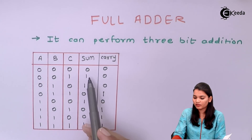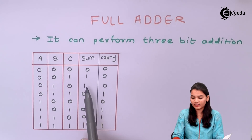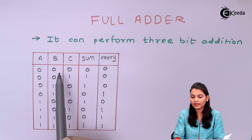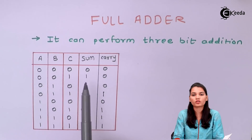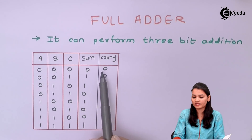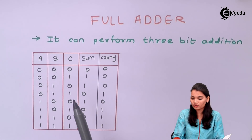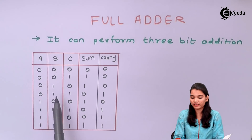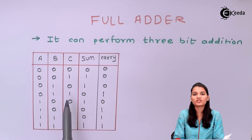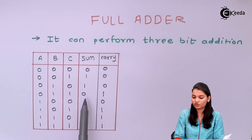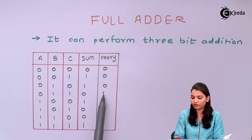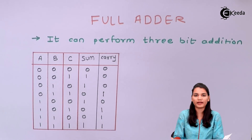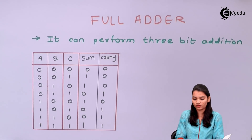Let's see the sum and carry. For A=0, B=0, C=0: A plus B gives zero and B plus C gives zero, so no carry is present and carry equals zero. For another case: A plus B — zero plus one is one, and one plus one is zero but carry will be one. So that's why carry equals one here. This is simply binary addition — refer to the previous video for details.